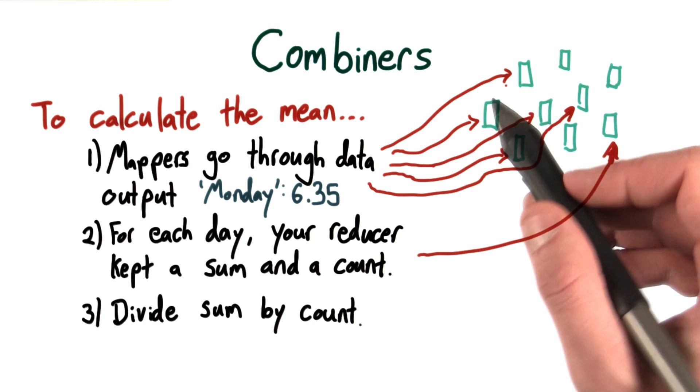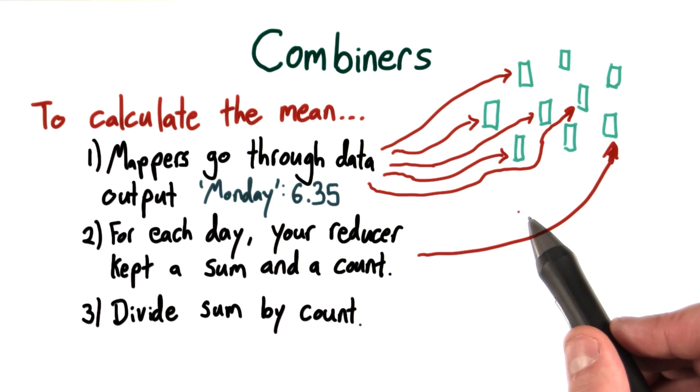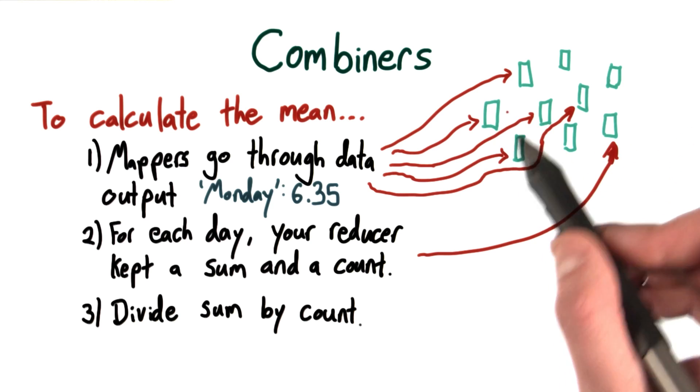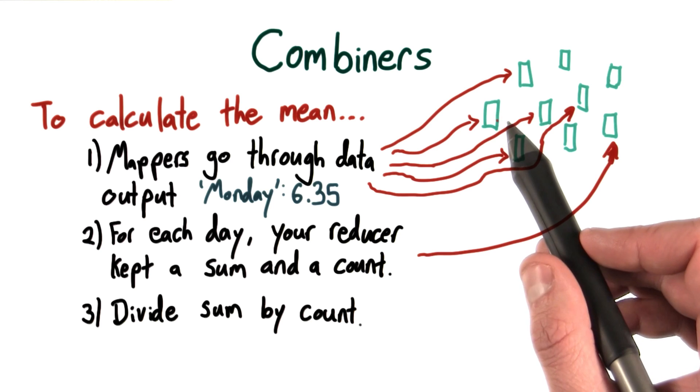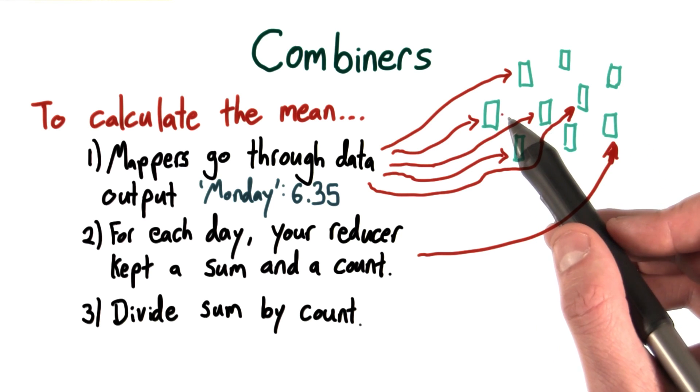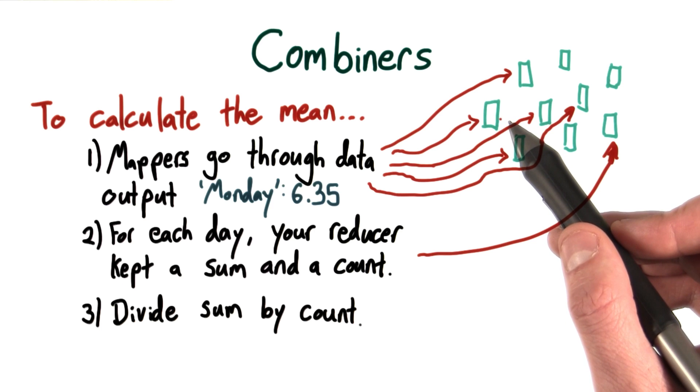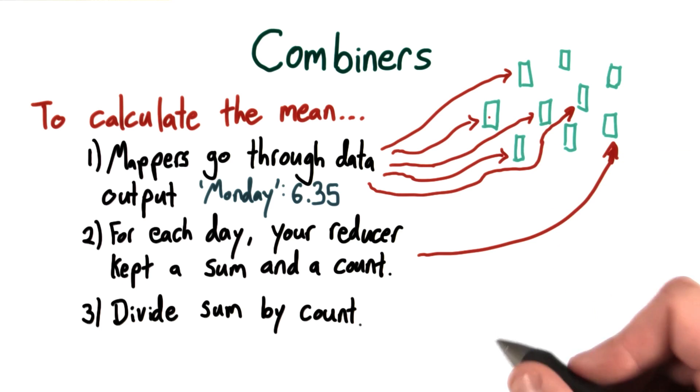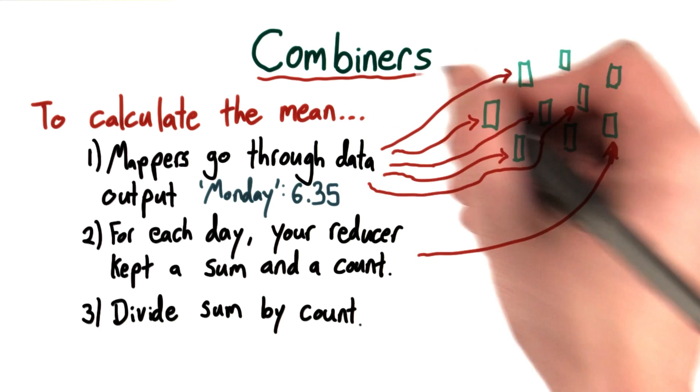So what if we could do some of this reduction locally? What if on each machine, before we send our key value pairs off to be reduced, what if we could do some pre-reduction? And it turns out we can. And that pre-reduction happens with these things called combiners.